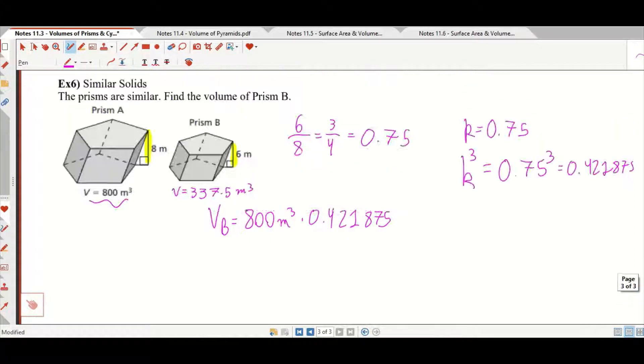The point we're trying to make here is that this comes out to be pretty different. So small changes in your linear distances can lead to big changes in volume. Even though it's only 75% the height of prism A, it's quite a bit less in volume: 42.1875% the volume of prism A.